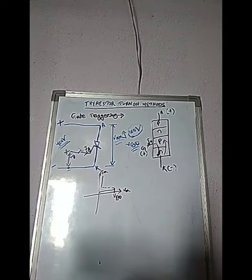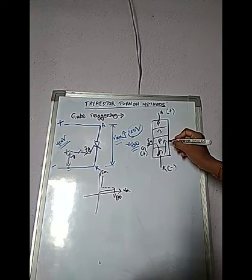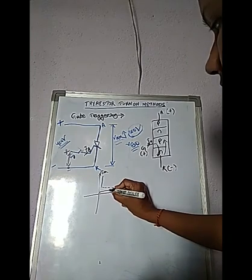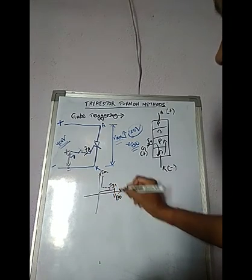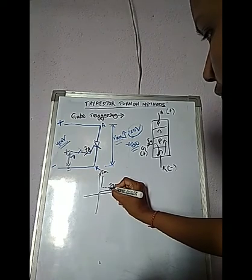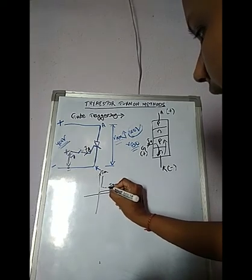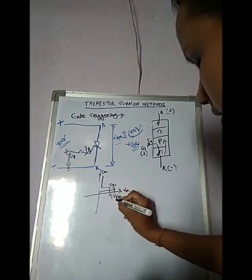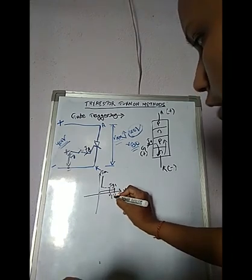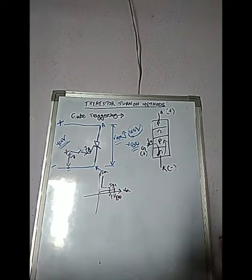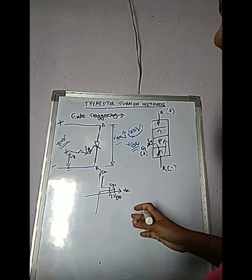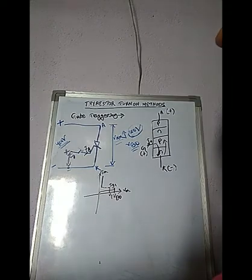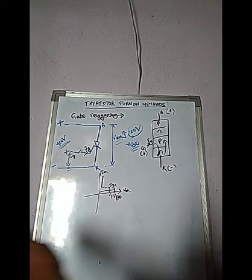When charges are injected into the inner P layer, the voltage at which forward breakover occurs is reduced. When gate current Ig1 is established, the thyristor switches at a lower voltage V1, below the original VBO level. The forward voltage at which the device switches to on state depends on the magnitude of the gate current.